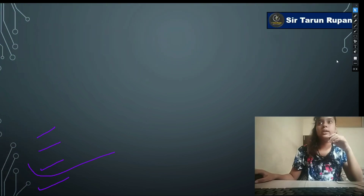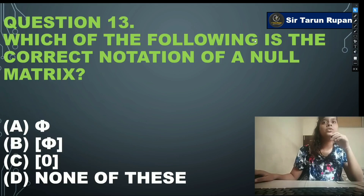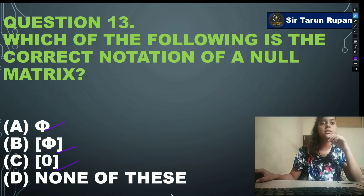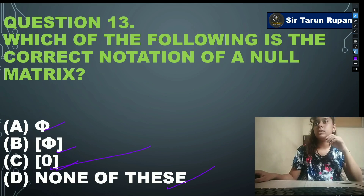Next question: which of the following is the correct notation of a null matrix? You can see the options on screen. Our correct answer is option C.